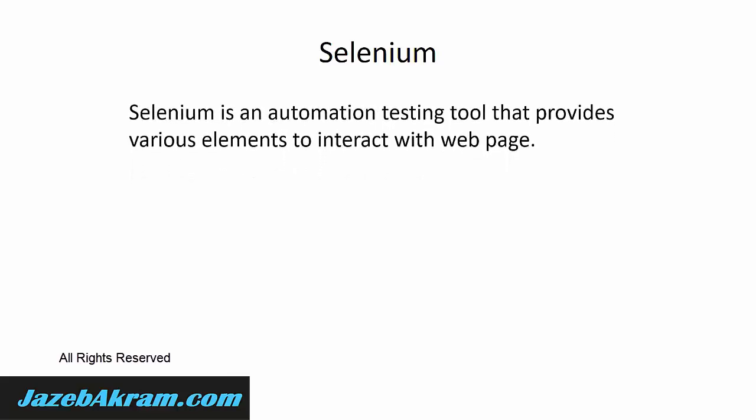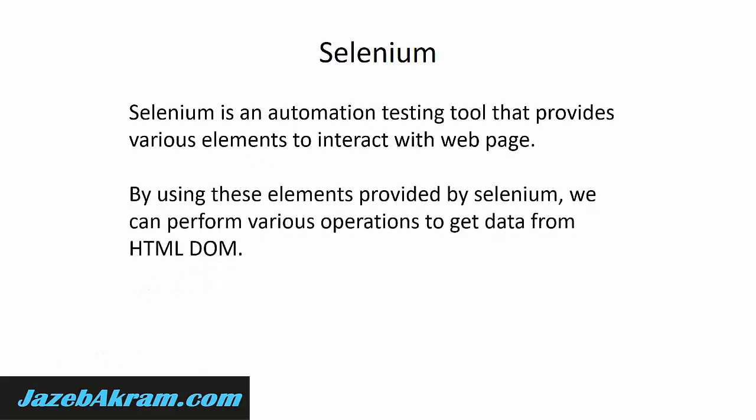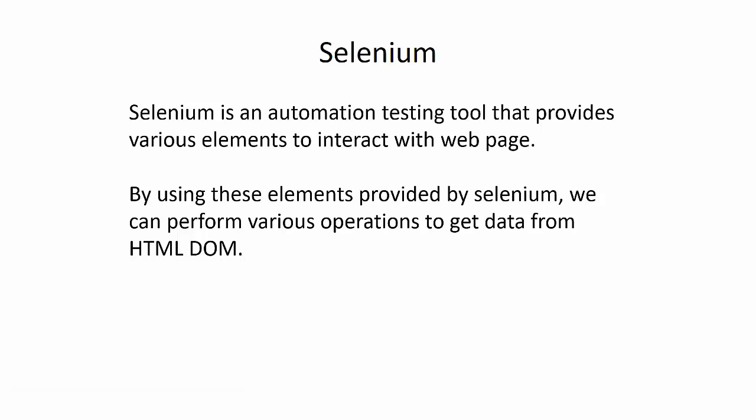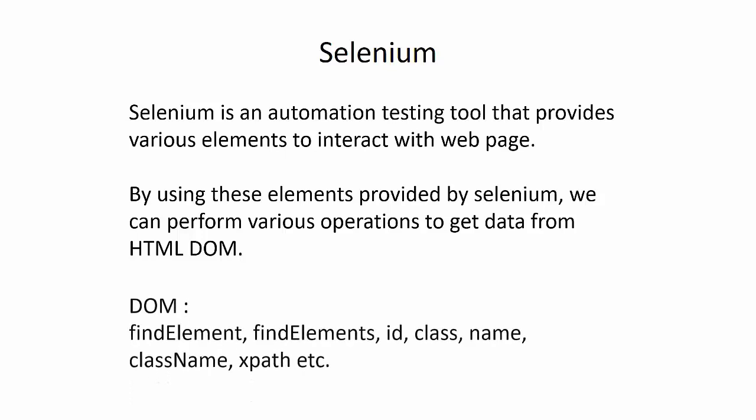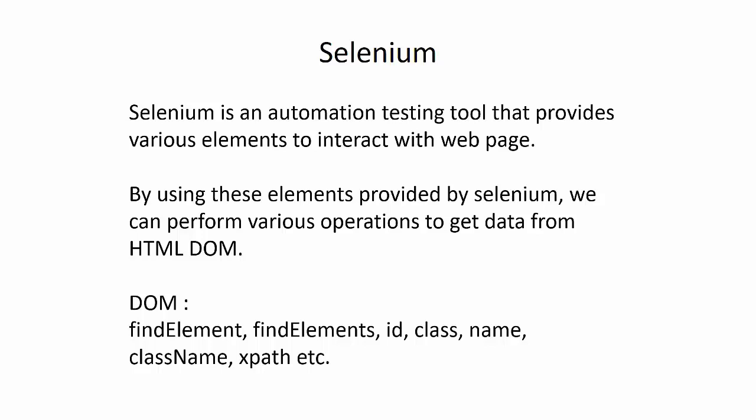Selenium is an automated tool that provides various elements to interact with a web page. Using these elements, we can perform operations to get data from the HTML DOM — Document Object Model. If you've worked with JavaScript, you're familiar with DOM concepts like finding elements by ID, class name, name attribute, or XPath. Since DOM elements are on a web page accessed via a browser, we need a web driver to interact with our web browser.